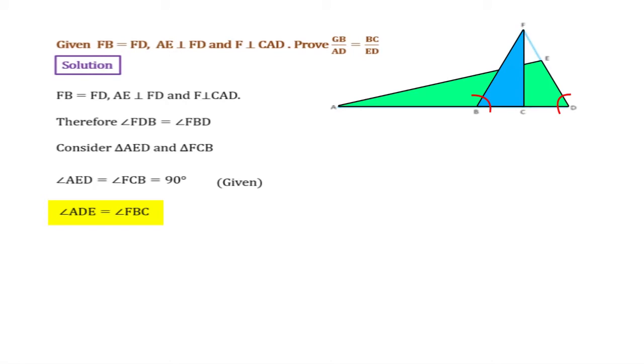We can see another pair of angles which are equal. That is, angle ADE is equal to angle FBC because angles opposite to equal sides are equal.